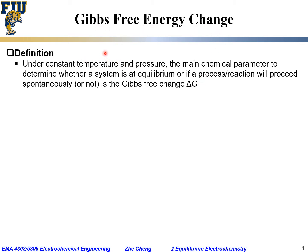Typically, when we look at Gibbs free energy change — our delta G — we examine our system at constant temperature and constant pressure. So delta G, by definition, is the Gibbs free energy of the final state minus the Gibbs free energy of the initial state. That's what you learn in thermodynamics: G final minus G initial is the Gibbs free energy change for a process or a reaction.